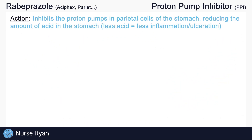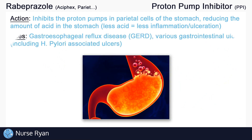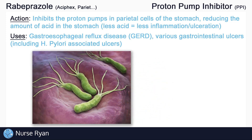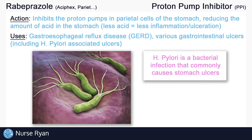So what are the uses for Rabeprazole? Rabeprazole can be used to treat various conditions related to excess stomach acid, including gastroesophageal reflux disease, or GERD, and treatment of various gastrointestinal ulcers, including H. pylori-associated ulcers. H. pylori is a bacterial infection that commonly causes stomach ulcers. Now, Rabeprazole won't actually treat the infection, but rather treat some of the symptoms of the infection, such as the ulcers or heartburn, simply by reducing stomach acid.